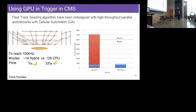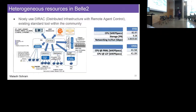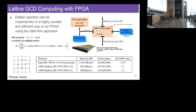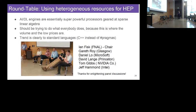To reach 100 kHz, 14 hybrid nodes versus 128 CPU-only nodes is needed — a factor of 5 cost reduction. They also have a heterogeneous resource implementation using DRack to develop distributed resources; by fiscal year 2021 two institutes can distribute and share load. There is a nice talk synergistic with Track 3: a QCD calculation using highly parallelized FPGAs with a data-flow approach, achieving a performance-over-bandwidth ratio of 2.79 — very good.